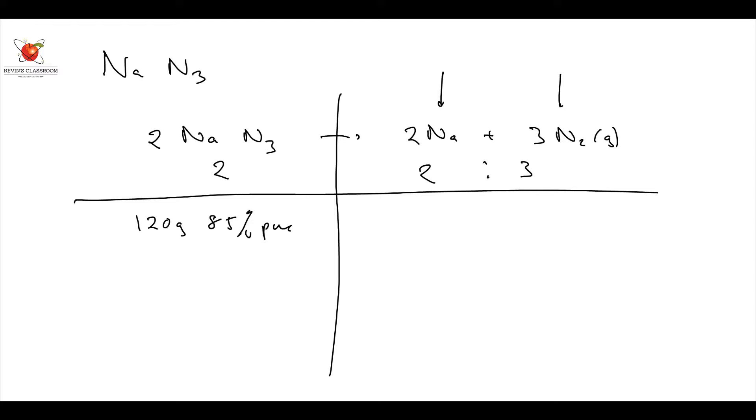The next they say, calculate the nitrogen gas at STP. So they want the volume at STP. What do we do when we see STP? We write 1 mole equals 22.4 decimeters cubed or liters. Straight away, we write that down.